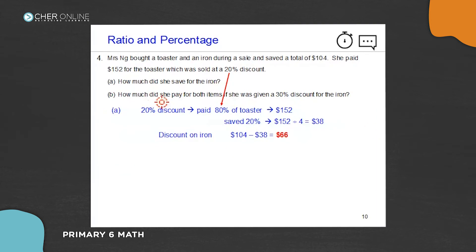How much did she pay for both items if she was given 30% discount for the iron? So we know that the discount given for the iron is $38. Actually, the discount for iron is 30%, so 30% for the iron is actually $66.